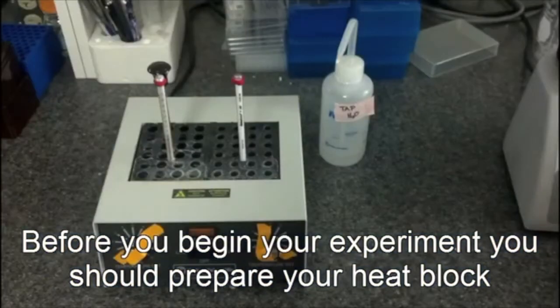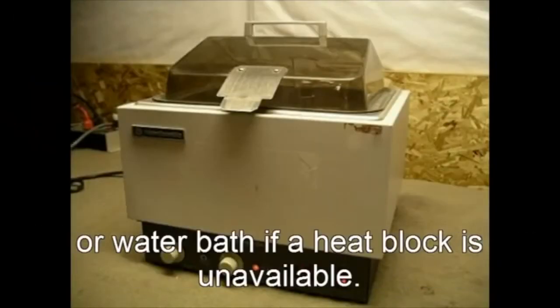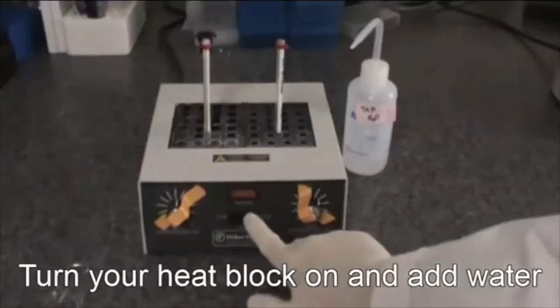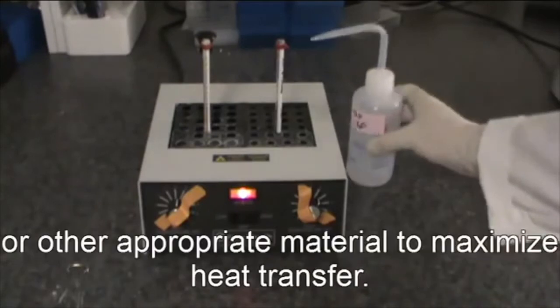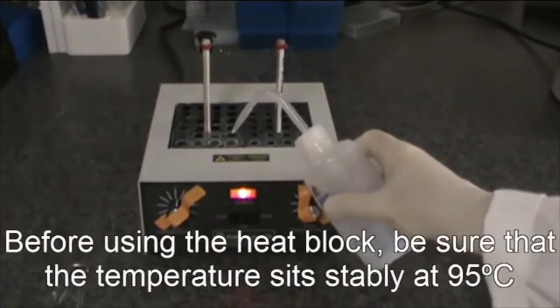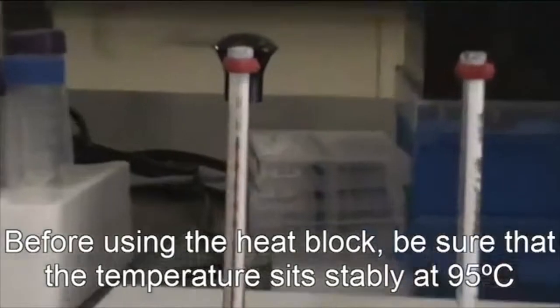Before you begin your experiment, you should prepare your heat block or water bath if a heat block is unavailable. Turn your heat block on and add water or other appropriate materials to maximize heat transfer. Before using the heat block, be sure that the temperature sits stable at 95 degrees Celsius.